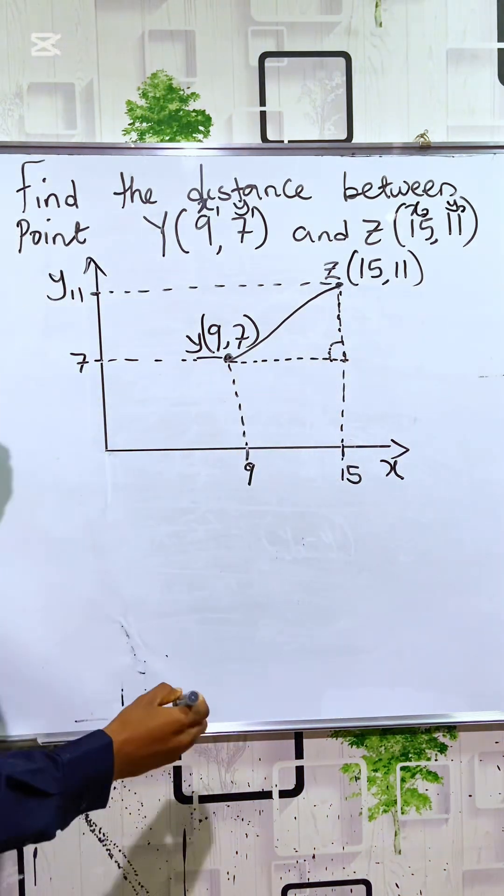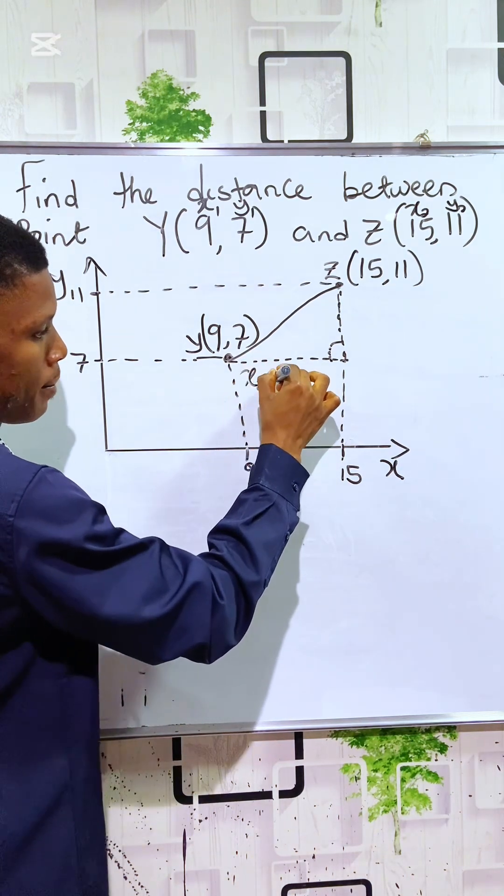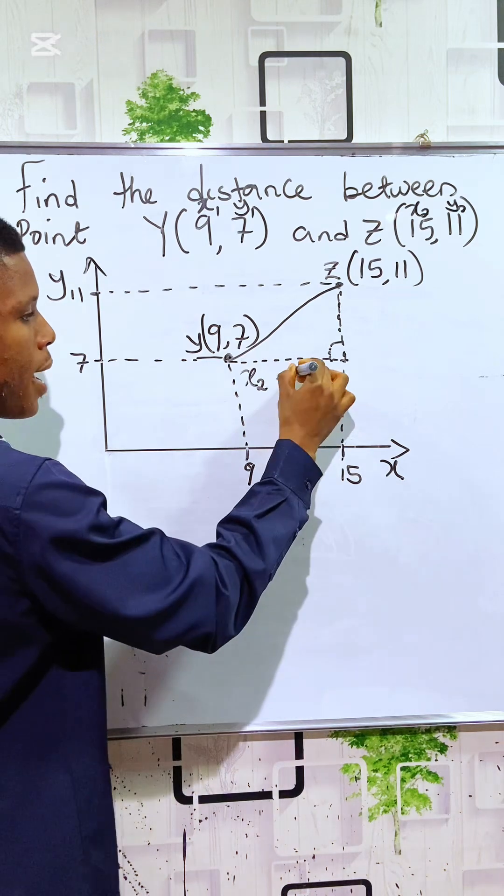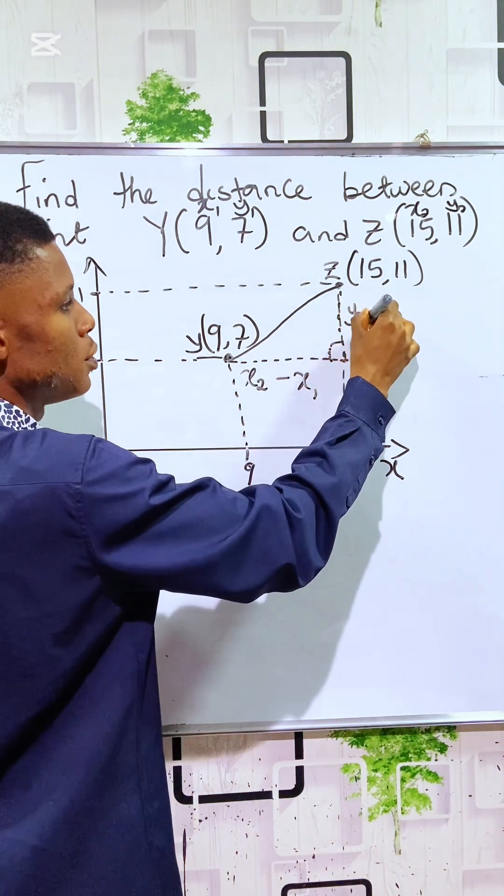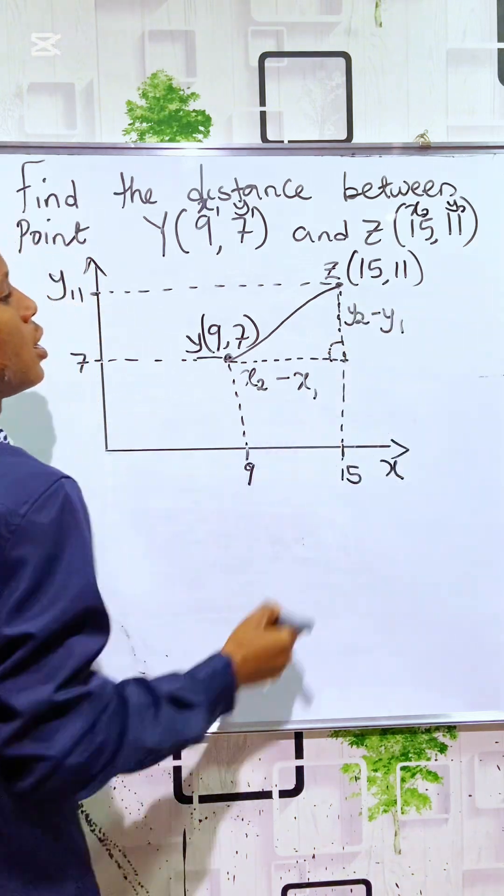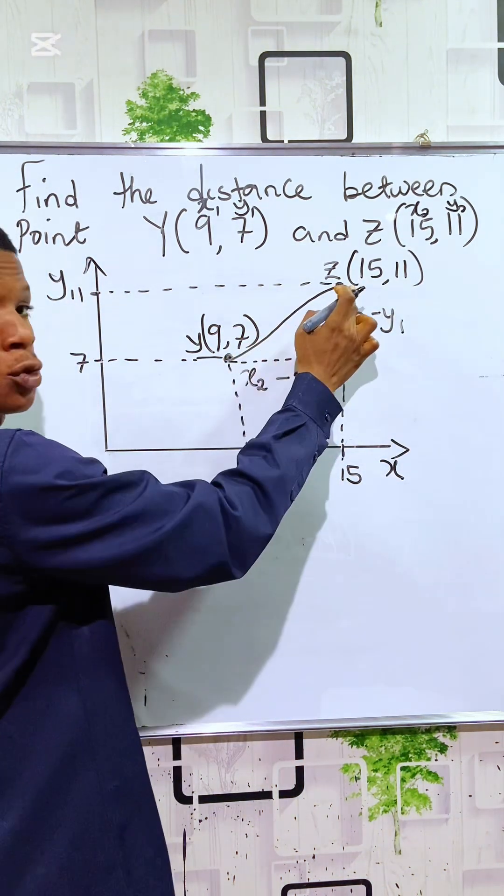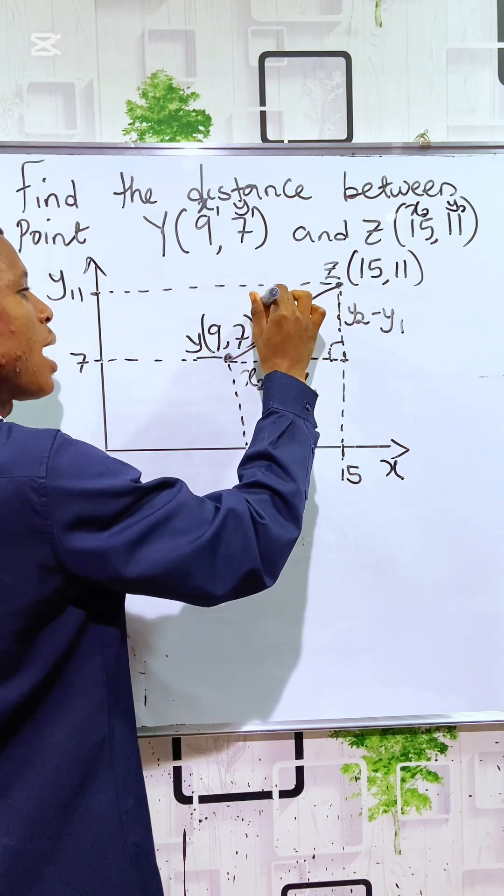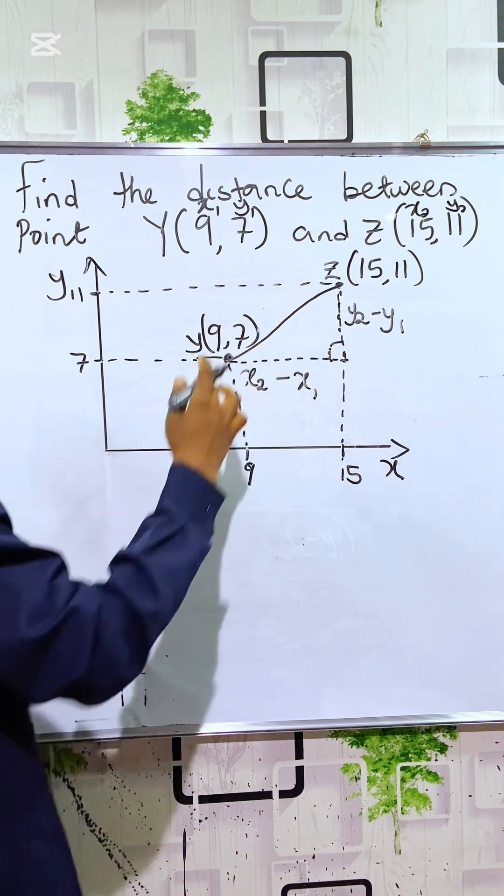Now, so here it can simply be seen as X2 minus X1. That's the distance here, X2 minus X1. Y here is Y2 minus Y1. So to find the distance between these two points, here becomes actually the hypotenuse, and here is what we are expected to find.